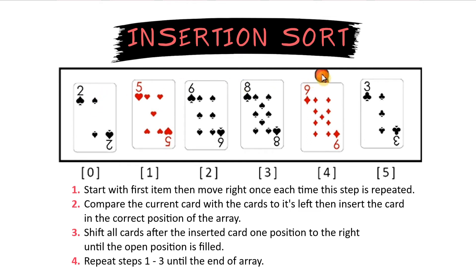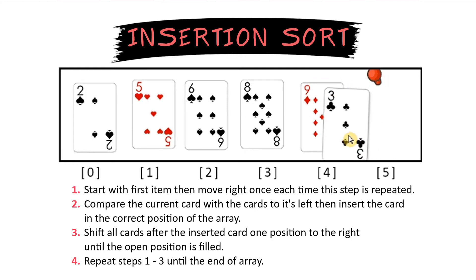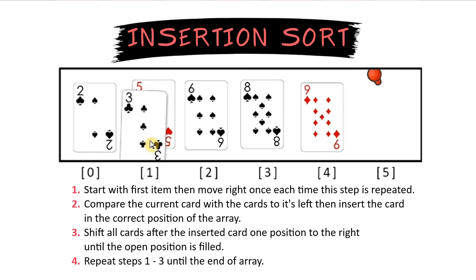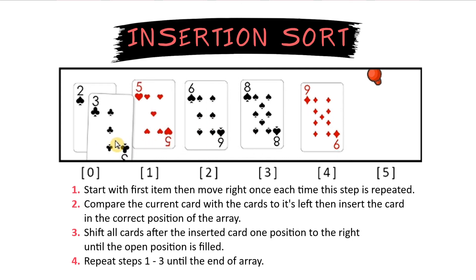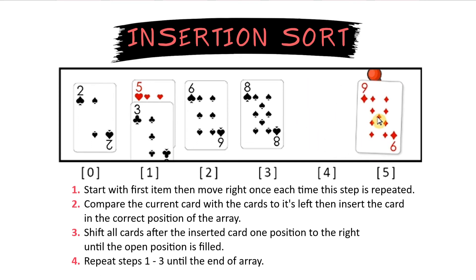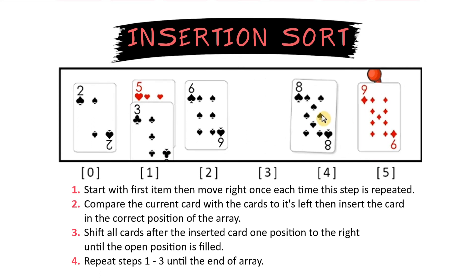Now those first 5 cards are in order. We move to the last card, the 3, and find out where does this belong — where would we insert this number compared to the others. We see it fits in between the 2 and the 5, so we'll put it where the 5 was and shift all the other cards over.